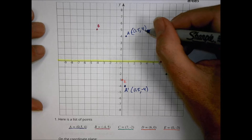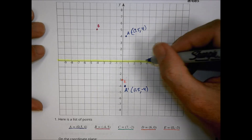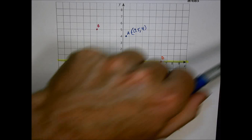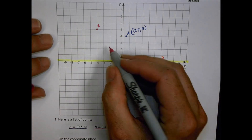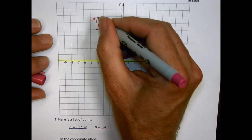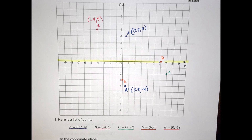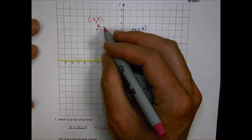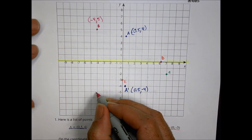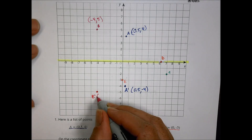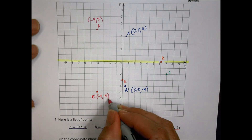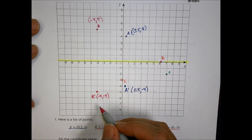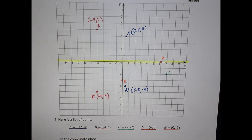We start to see the pattern: when reflecting across the x-axis, x stays the same but the y-value becomes its opposite — positive 4 becomes negative 4. That same pattern applies to point B, which started at negative 4, 5. Reflecting across the x-axis, we keep x the same and change y to negative 5, giving B prime at negative 4, negative 5.